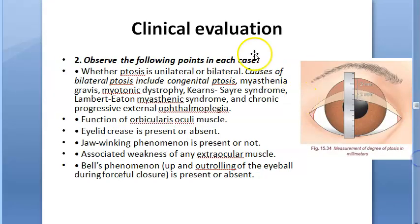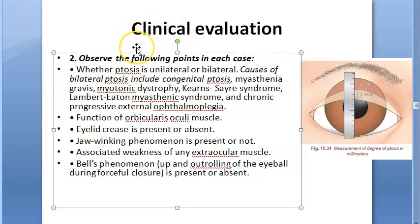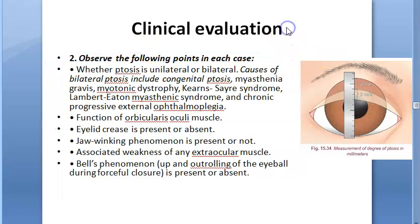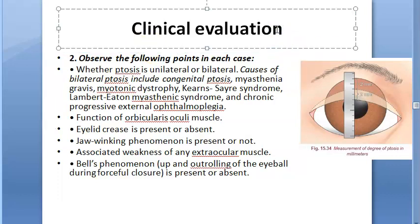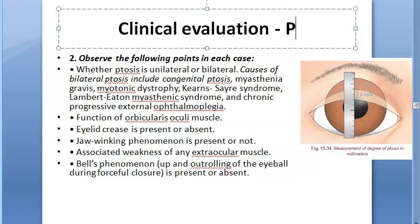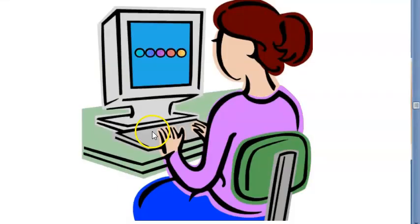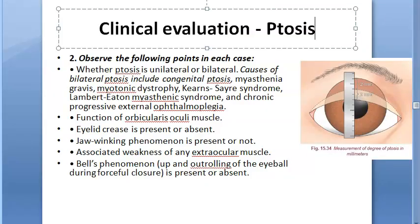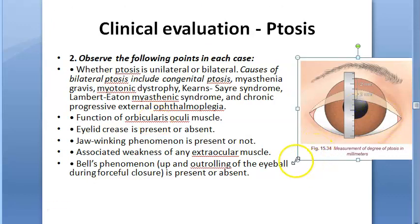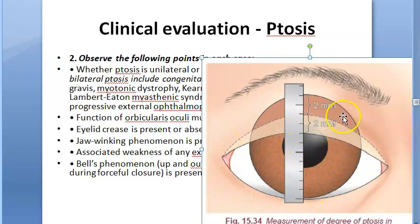After examination and excluding pseudo-ptosis, we come to evaluating the actual ptosis. You will measure the degree of ptosis in millimeters. In this photo, they are measuring 2 millimeters of ptosis. First, observe whether the ptosis is unilateral or bilateral.